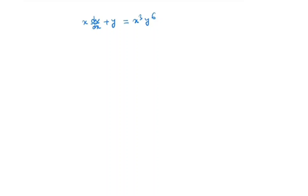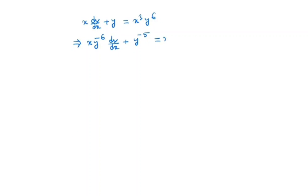So in this method, what we will do? We will divide this equation by y to the power 6. So we have x times y to the power minus 6 times dy/dx is equal to y to the power minus 5 minus x cubed.